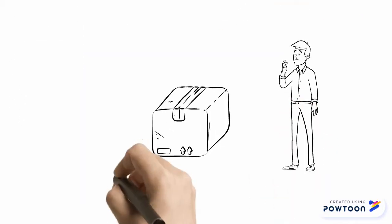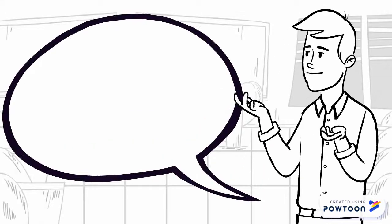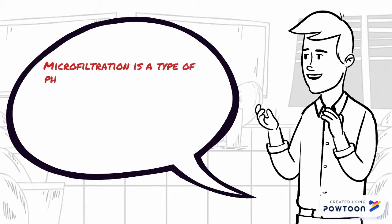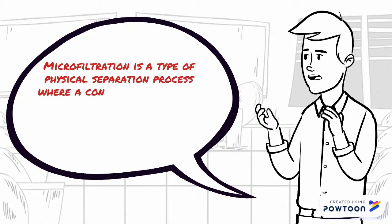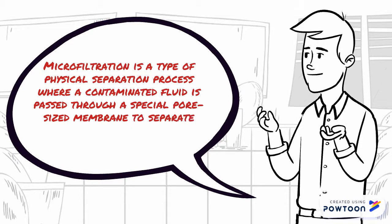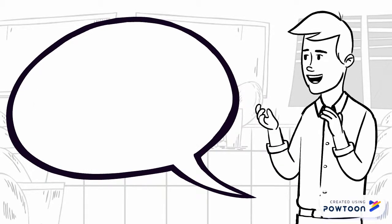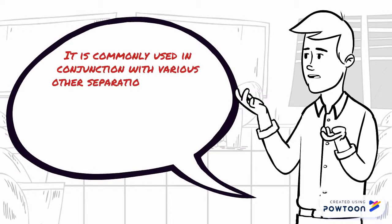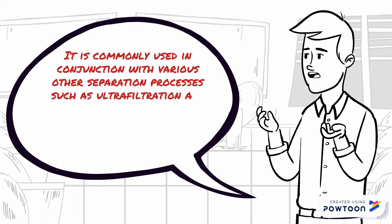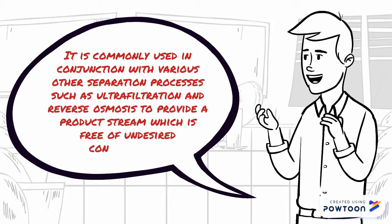Today we are going to talk about microfiltration. Microfiltration is a type of physical filtration process where contaminated fluid is passed through a special pore size membrane to separate microorganisms and suspended particles from process liquid. It is commonly used in conjunction with various other separation processes such as ultrafiltration and reverse osmosis to provide a product stream which is free of undesired contaminants.